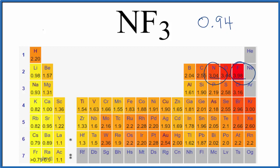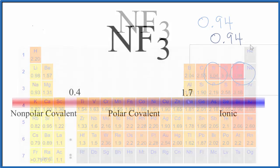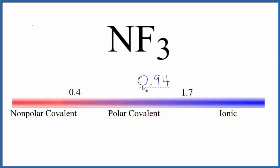Let's look at a scale to see that. 0.94 is about right there. That means the bonds between the nitrogen and fluorine atoms will be covalent bonds, and we have a covalent molecule. If you want to look at the polarity of the entire NF3 molecule, there is a link at the end of the video.